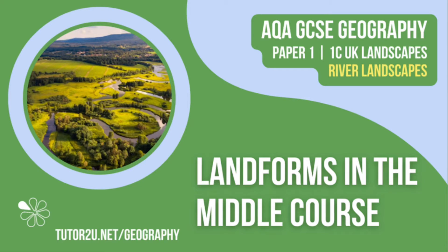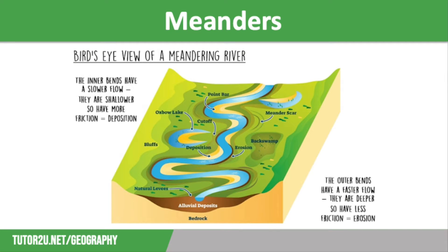Welcome to this Tutor2U revision video that looks at the landforms in the middle course of a river. This is part of Paper 1 Unit C River Landscapes. Erosional and depositional processes in the middle course of the river lead to the formation of meanders and oxbow lakes. We're going to start off by thinking about how meanders form.